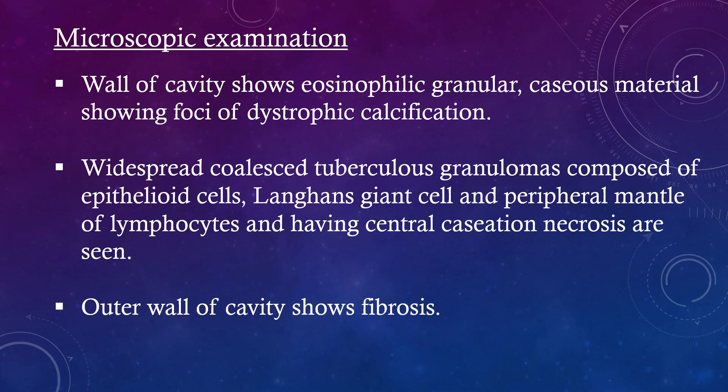Microscopic examination: The wall of the cavity shows eosinophilic granular caeous material with foci of dystrophic calcification. Widespread coalesced tuberculosis granulomas composed of epithelioid cells, Langhans giant cells, and a peripheral mantle of lymphocytes, having central caseation necrosis, are seen. The outer wall of the cavity shows fibrosis.